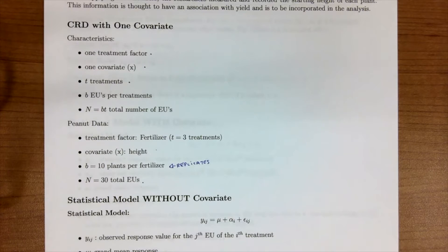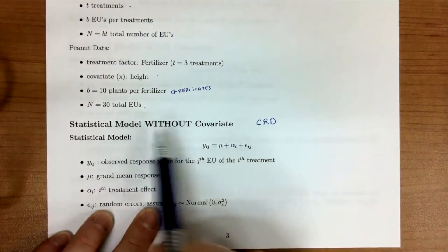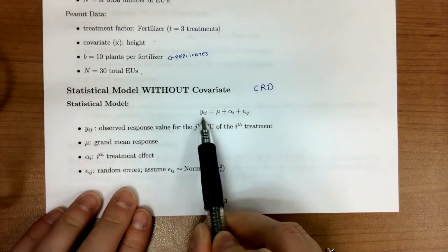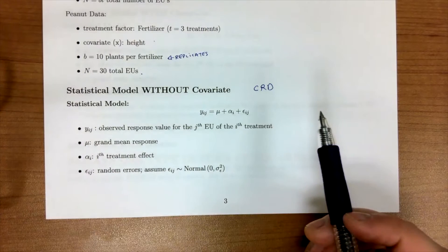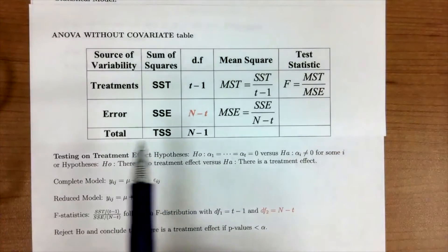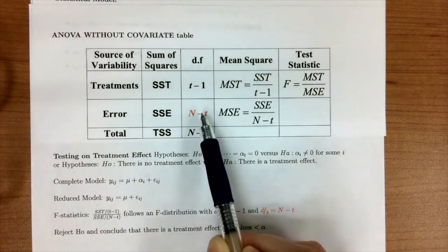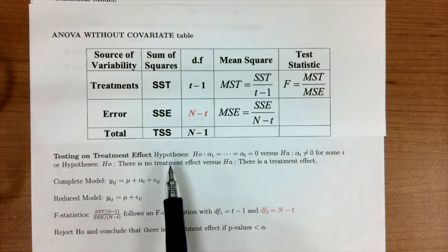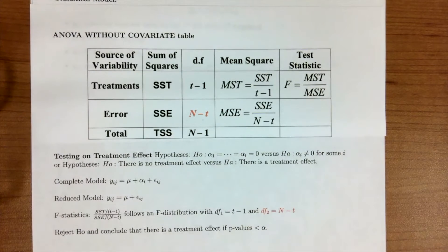Before stepping into the ANCOVA table with the covariate, let's back up and remind ourselves of the statistical model of a CRD without a covariate. We had our Y as the response, our grand mean, our treatment effect, and our random errors. Our ANOVA table had sums of squares for treatment and sums of squares error, with degrees of freedom N minus T. When testing treatment effects, our hypotheses were: null — all alpha one through alpha T equal zero (no treatment effect) — versus alternative — at least one differs (there is a treatment effect).